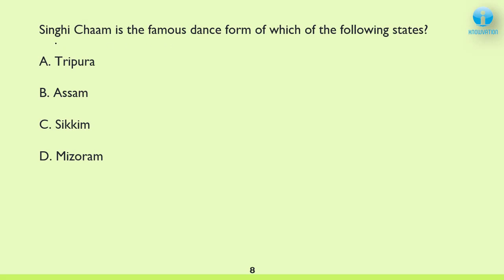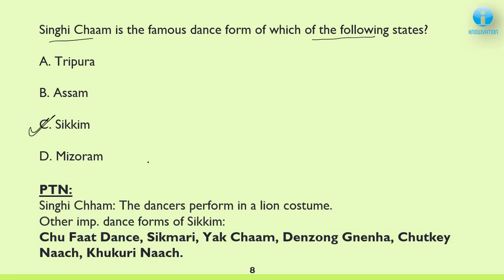Next: Singhi Sham is the famous dance form of which of the following states? The correct answer is C — Sikkim. In Singhi Sham, the performers dance in a lion's costume. You can remember this because 'Singh' relates to lion in Hindi, and since people wear a lion's costume, you can relate it to Singhi Sham — correct answer Sikkim.